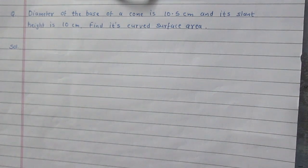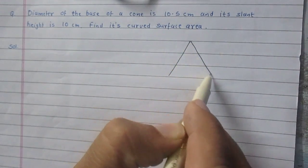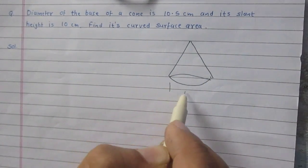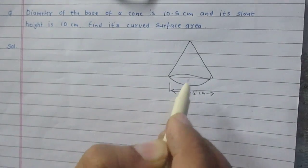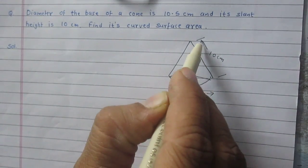Diameter of the base of a cone is 10.5 cm and its slant height is 10 cm. Find its curved surface area. We are given that there is a cone with its base diameter 10.5 cm and its slant height is 10 cm.